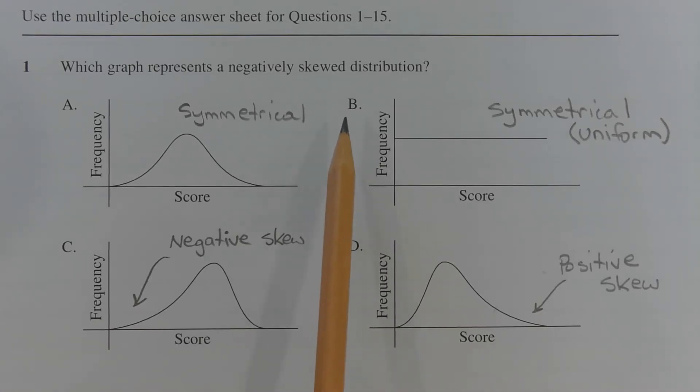Option B also describes a symmetrical distribution. This type of distribution is called a uniform distribution.